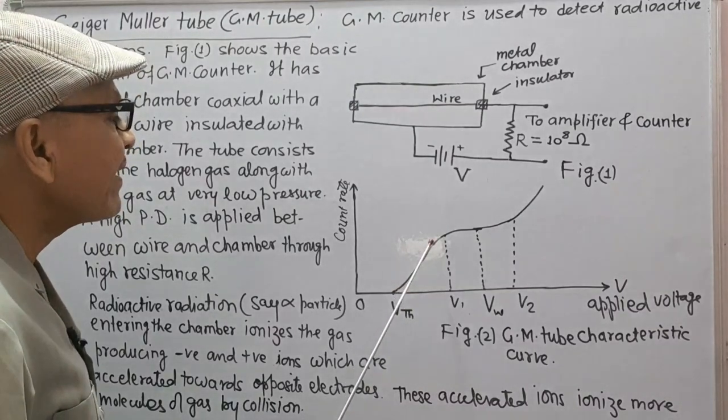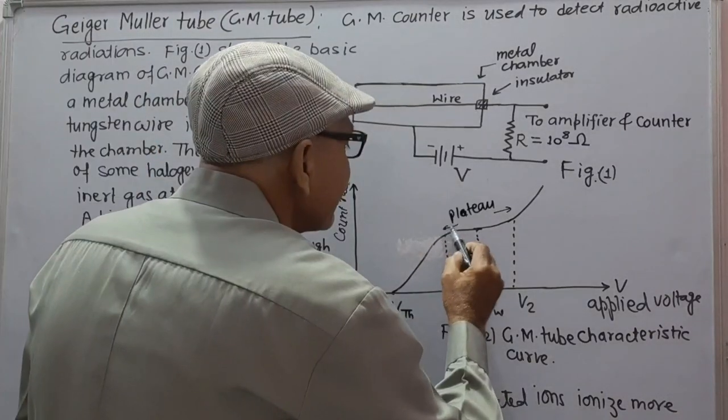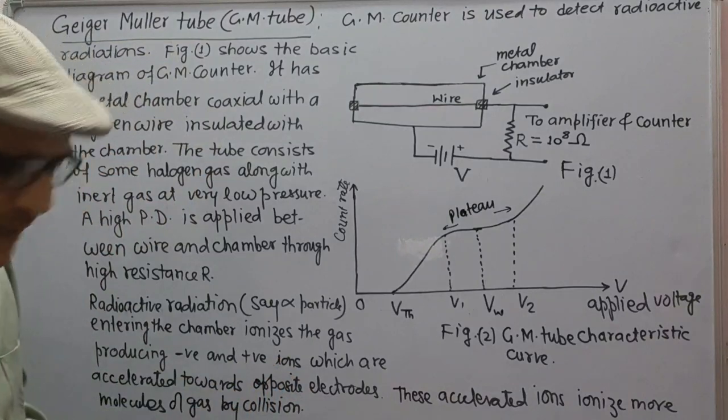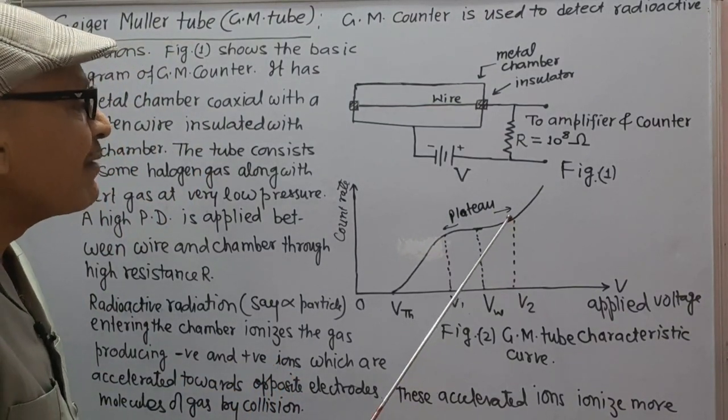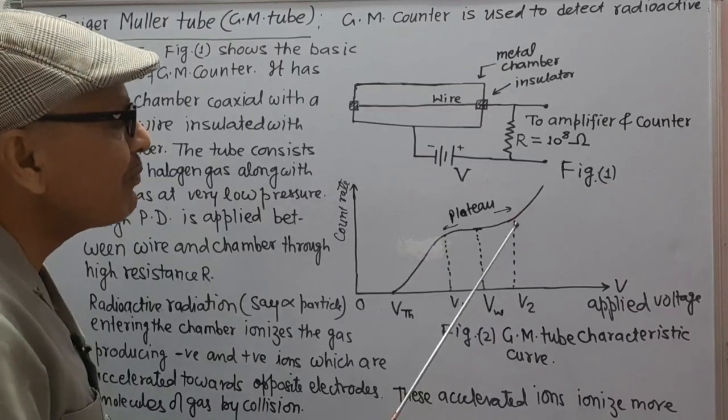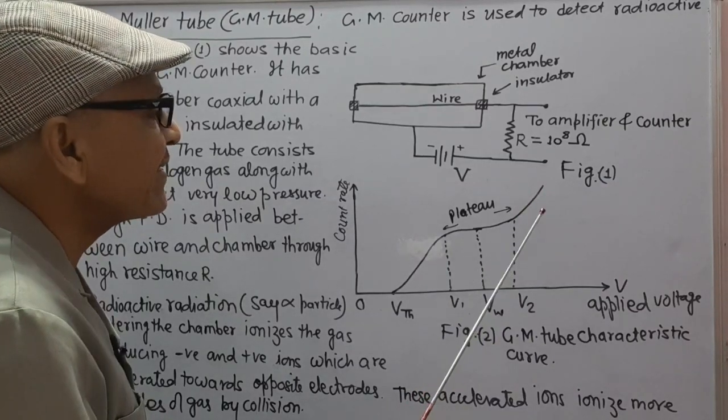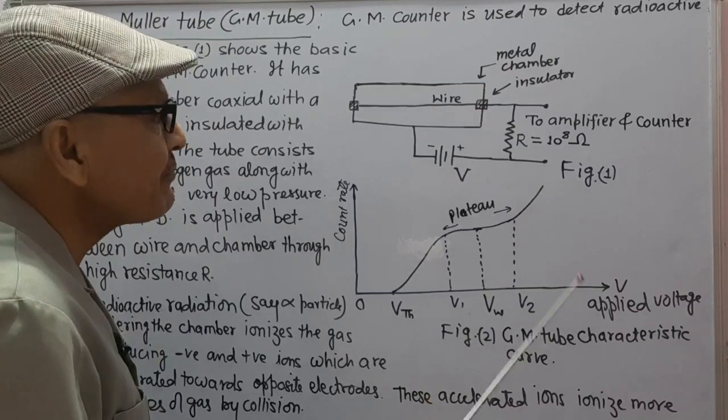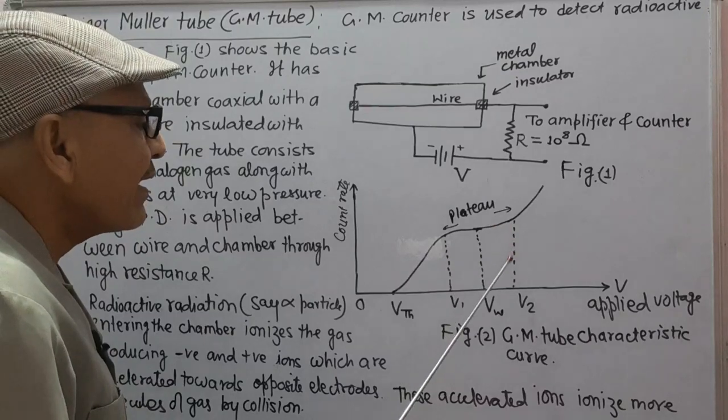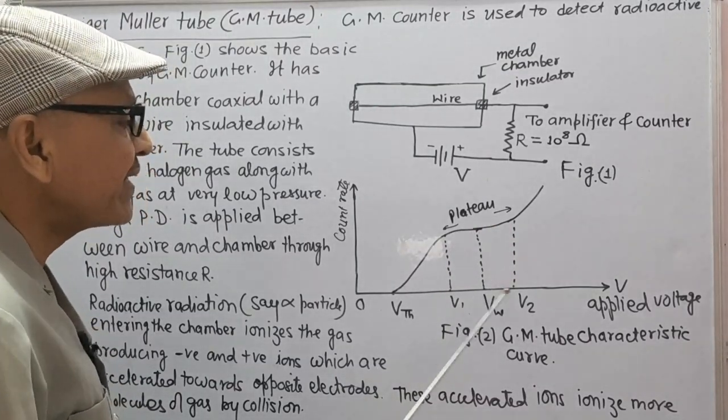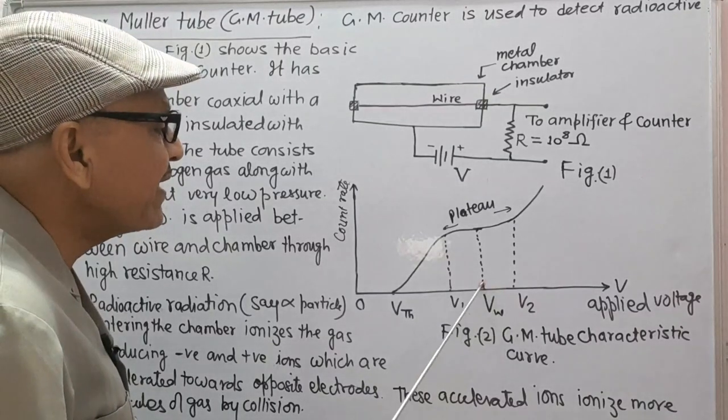Now the count rate suddenly increases up to point V1. Then a plateau comes from V1 to V2. Beyond voltage V2, the count rate suddenly increases which may damage the GM tube. Therefore, the best operating voltage is the mean of V1 and V2 at voltage VW.